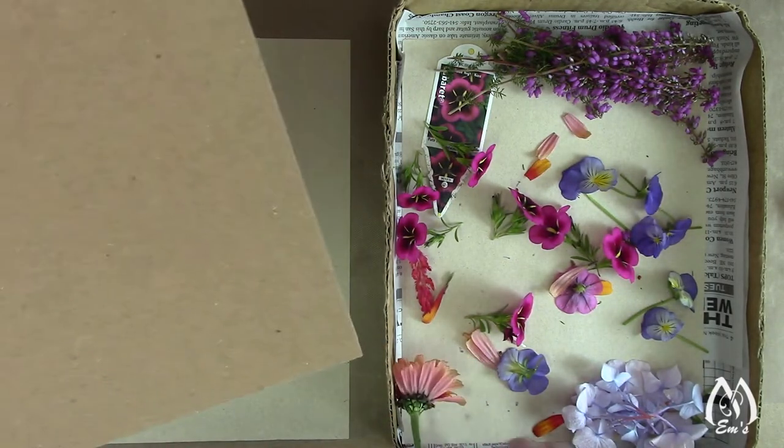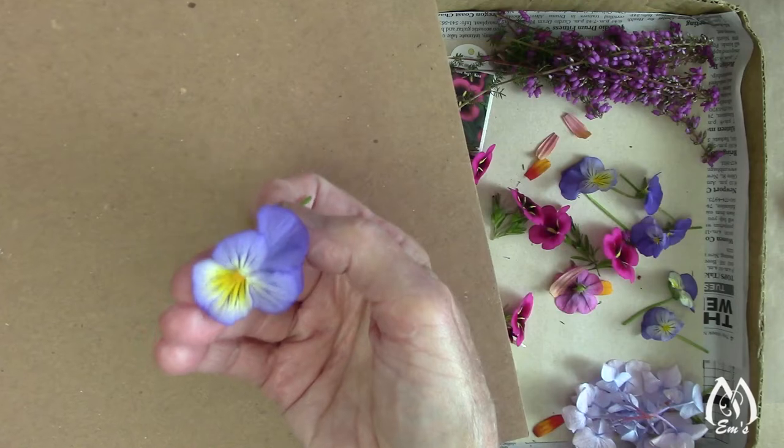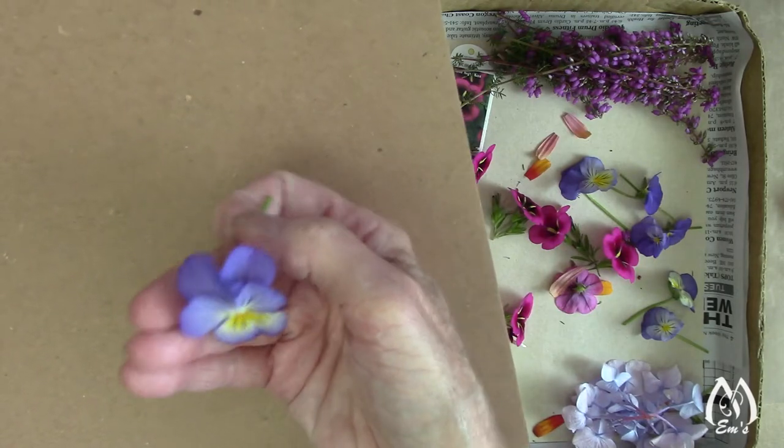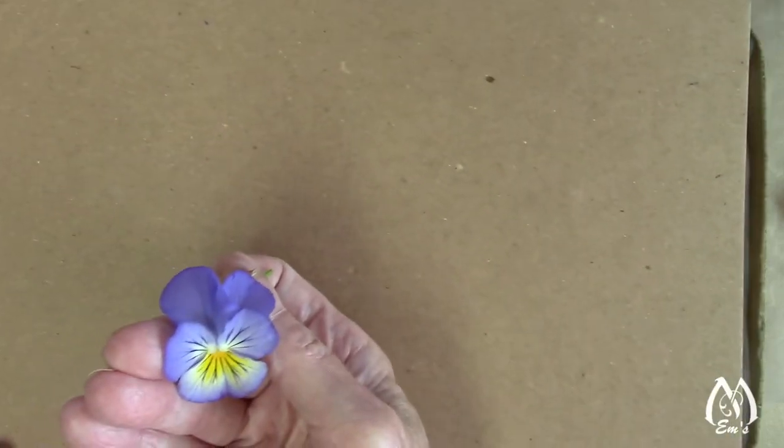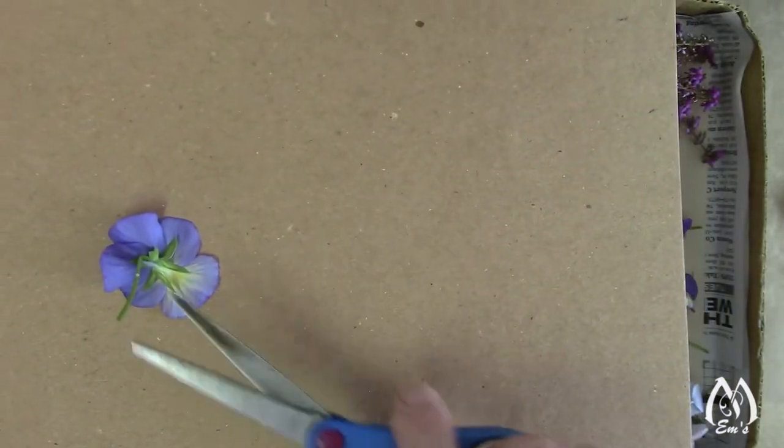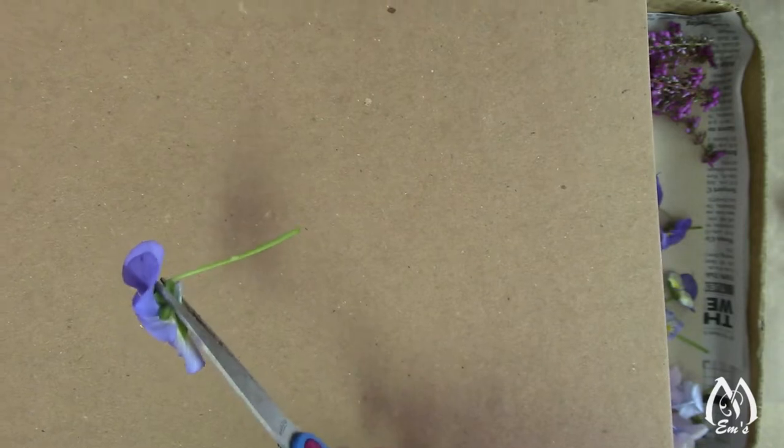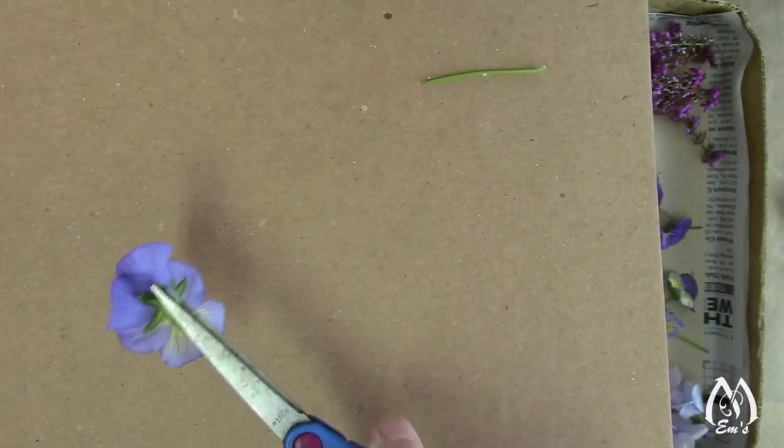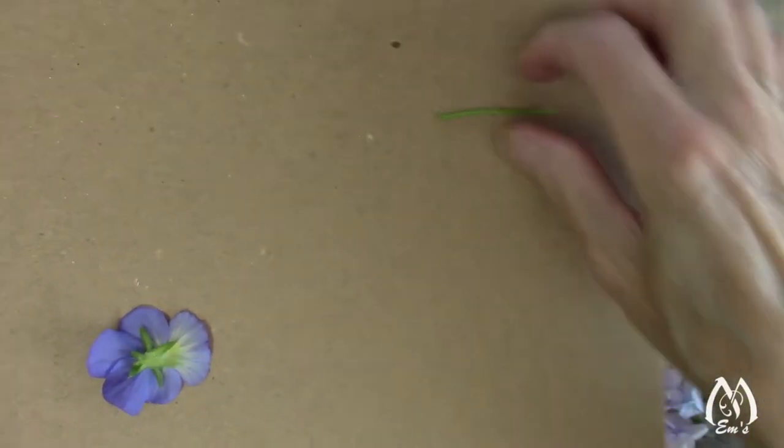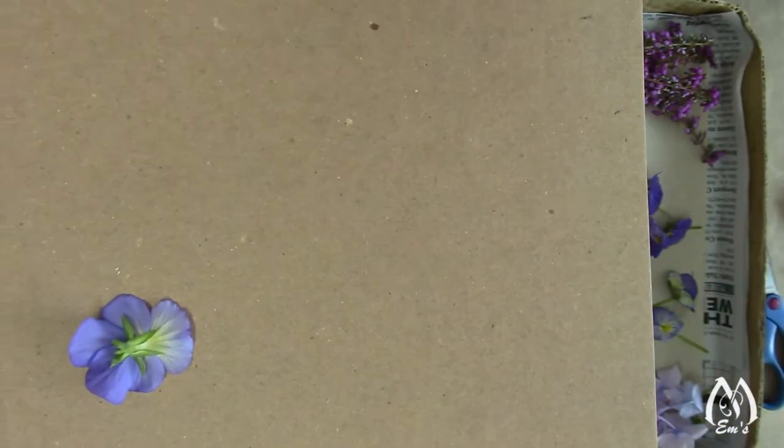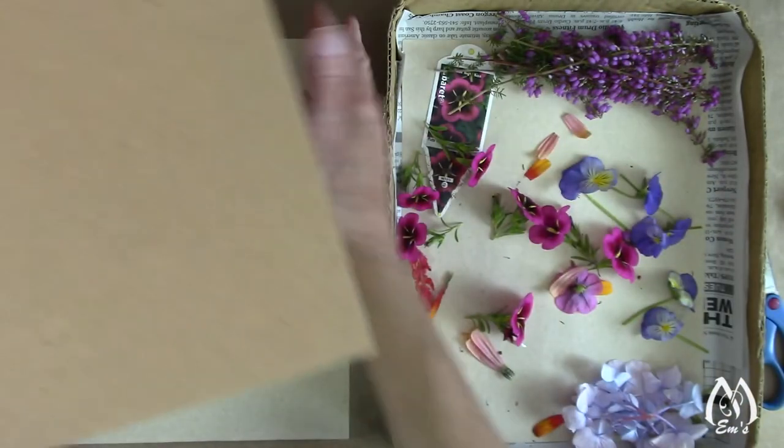And then, for the pansy, I just snip the back off. And you don't want to snip it too far down, it'll fall apart. So I do it about like that. And then I'll press the stems separately. And so that's how I'll do a pansy.